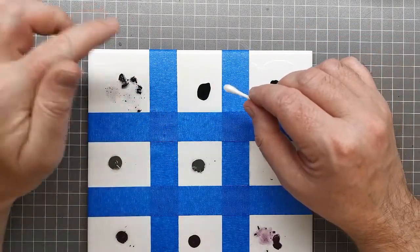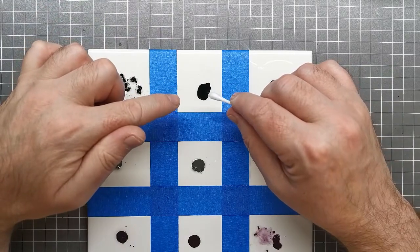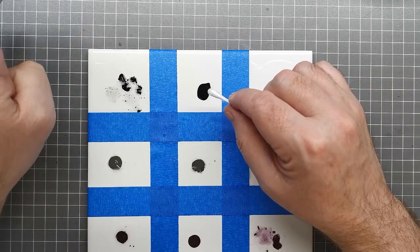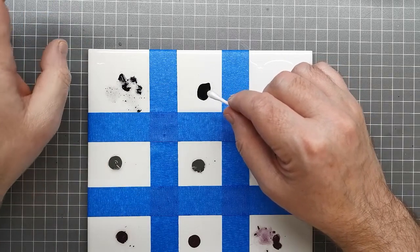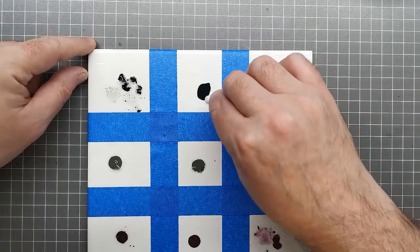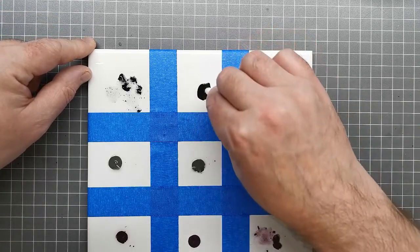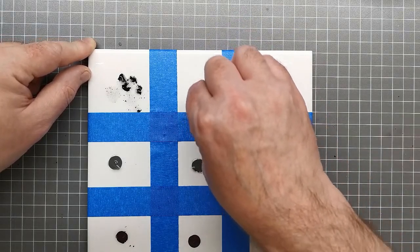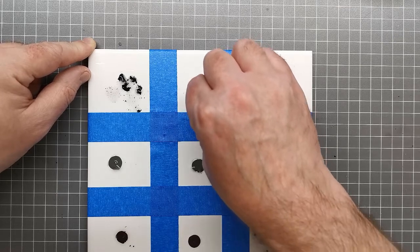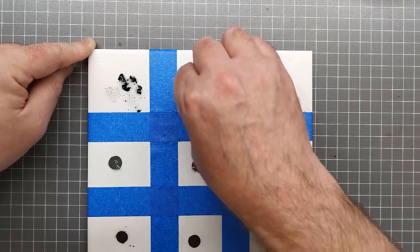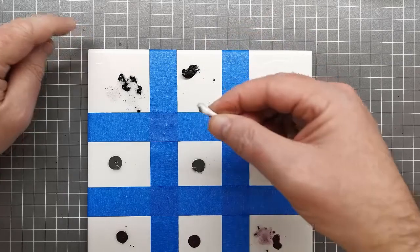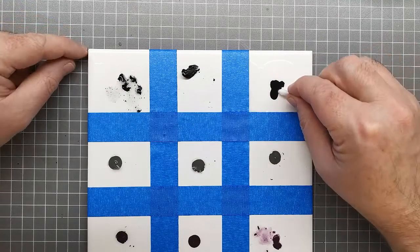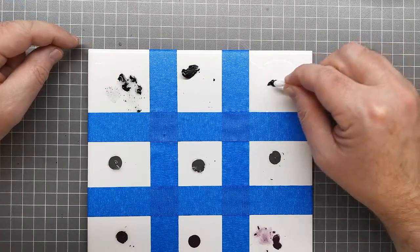The next one is the Vallejo airbrush cleaner. I don't expect this to behave particularly well with this primer. It's not designed specifically for this type of paint, so I'm not really expecting the Vallejo stuff to do well here. It has lifted around the edges and looks like it will lift off, but again it's taking a little bit of force.